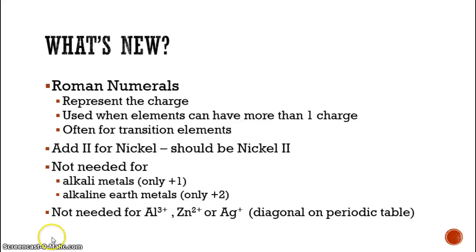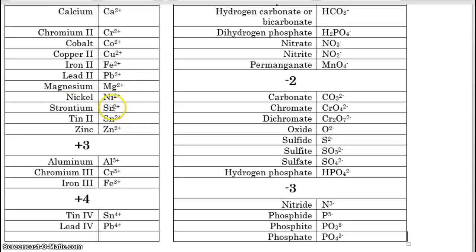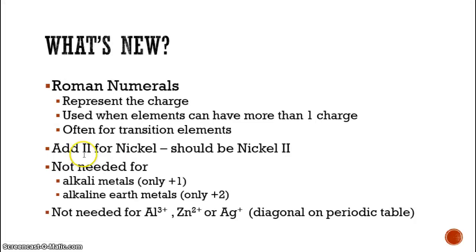On our chart, nickel, which is a transition element, is just nickel and then nickel two plus. That's a mistake on our chart, so I want you to go change that and add a Roman numeral two here. So it should be nickel Roman numeral two. So go ahead and add a Roman numeral two for nickel. It should be nickel two.